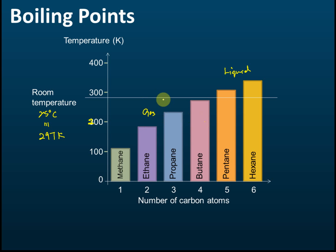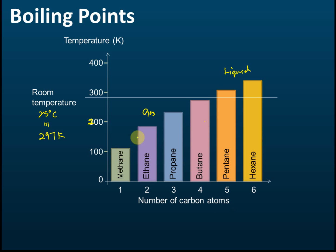From the fourth alkane onward, the boiling point is higher than room temperature, which means they exist as liquids at room temperature. So two things to know: boiling point increases as the number of carbon atoms per molecule increases, and the first four alkanes are gases at room temperature.